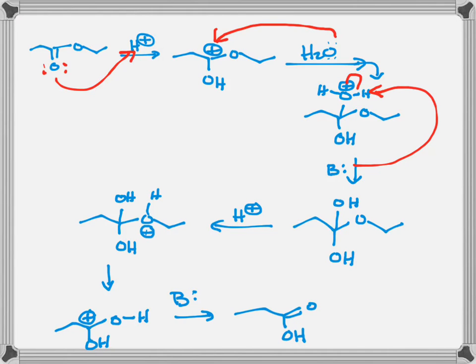This is followed by protonation of the tetrahedral intermediate on the alcohol carbon. Protonation makes alcohol a very good leaving group, so the alcohol leaves, giving us an intermediate which is almost a carboxylic acid.